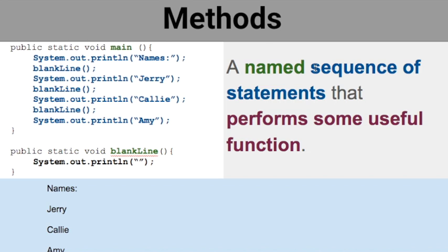A method contains a sequence of statements. Statements in code are what's going to execute. This method has seven statements in it, and they all follow proper syntax using parentheses and semicolons.